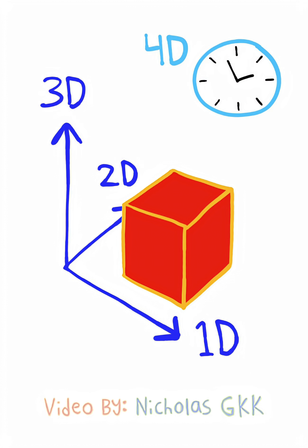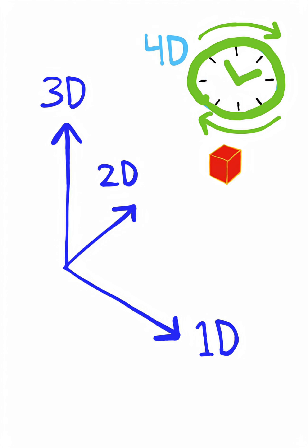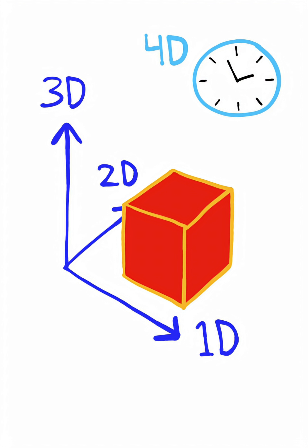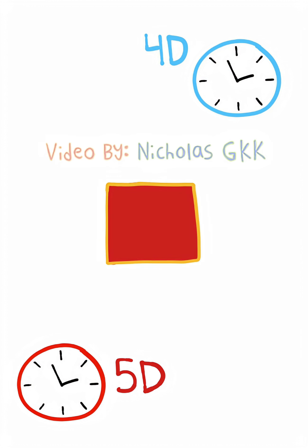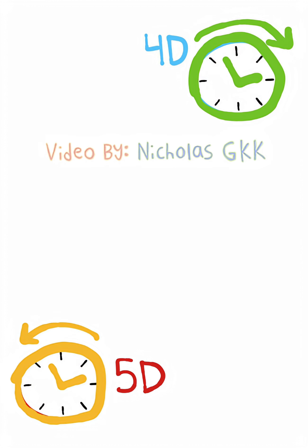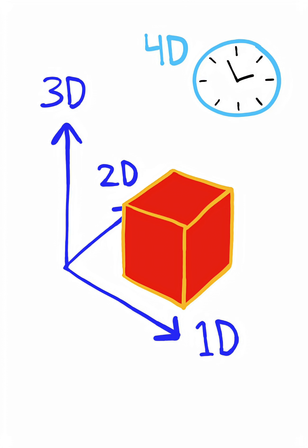We can add a time dimension since objects naturally move forward in time. And it may be tempting to think we can add more temporal dimensions, but doing this would cause contradictions and basically break reality as we know it.